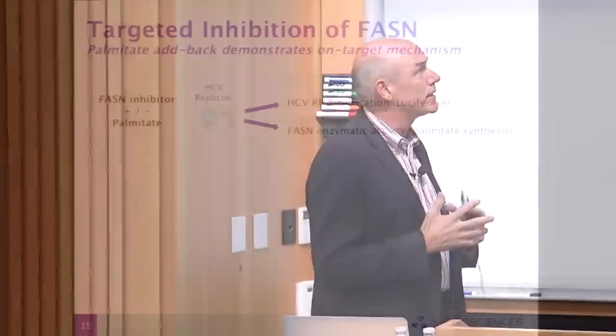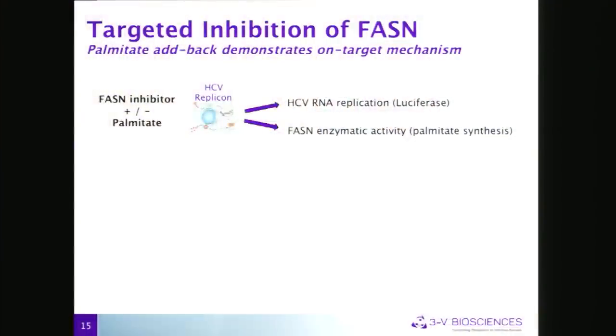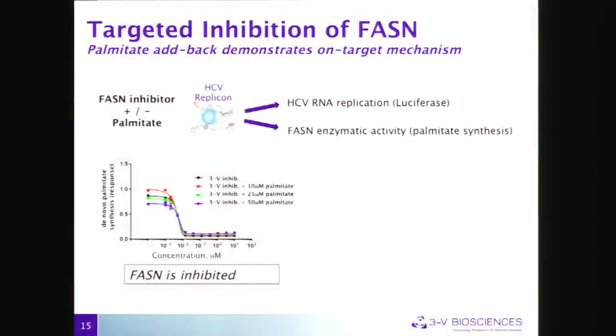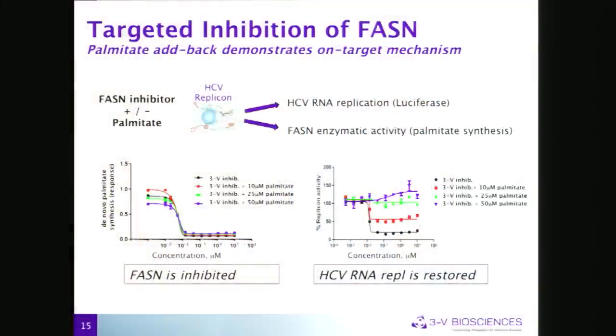To validate that we are hitting FASN and that's the reason for the antiviral response, we added palmitate back exogenously — the product of FASN. First we confirmed: when we add palmitate back, do we still inhibit the enzyme? Yes. Looking at C13-labeled palmitate with our inhibitor at different levels of added palmitic acid, we inhibit the enzyme whether we have 0 or 15 micromolar palmitate added. In that same experiment, as we added 25 or 50 micromolar palmitate back, we relieved the antiviral response. So antiviral activity is being modulated through FASN inhibition.